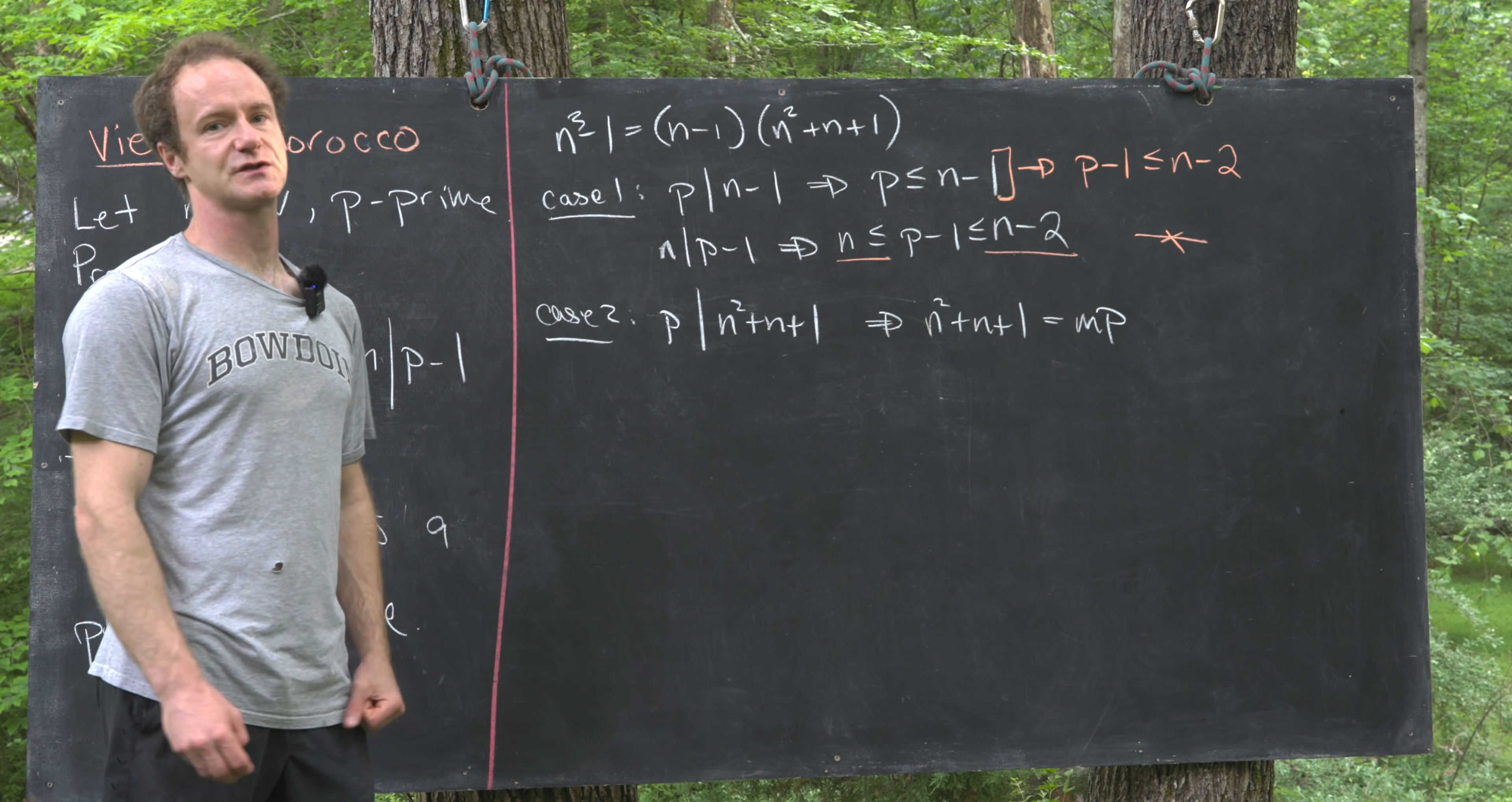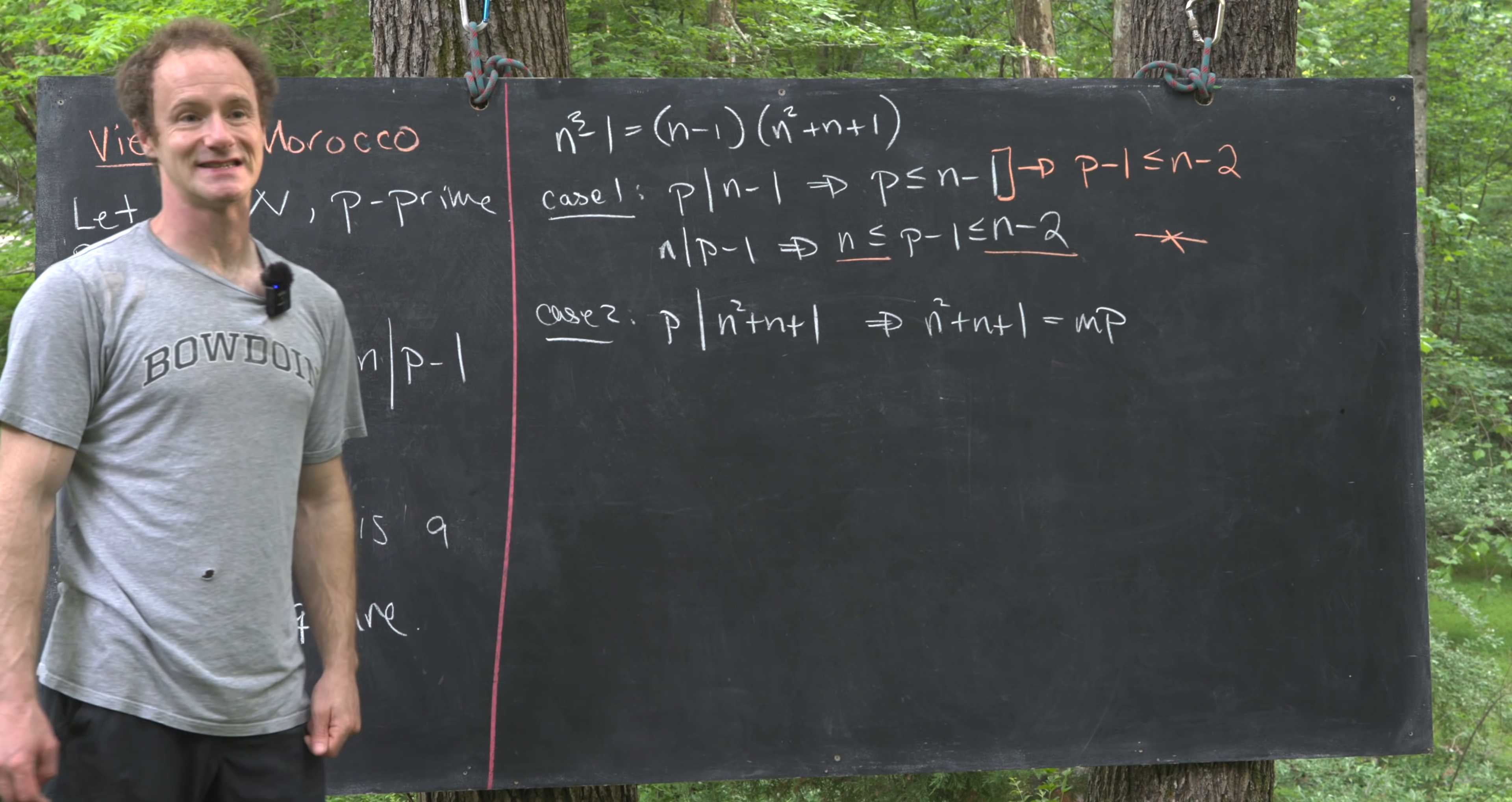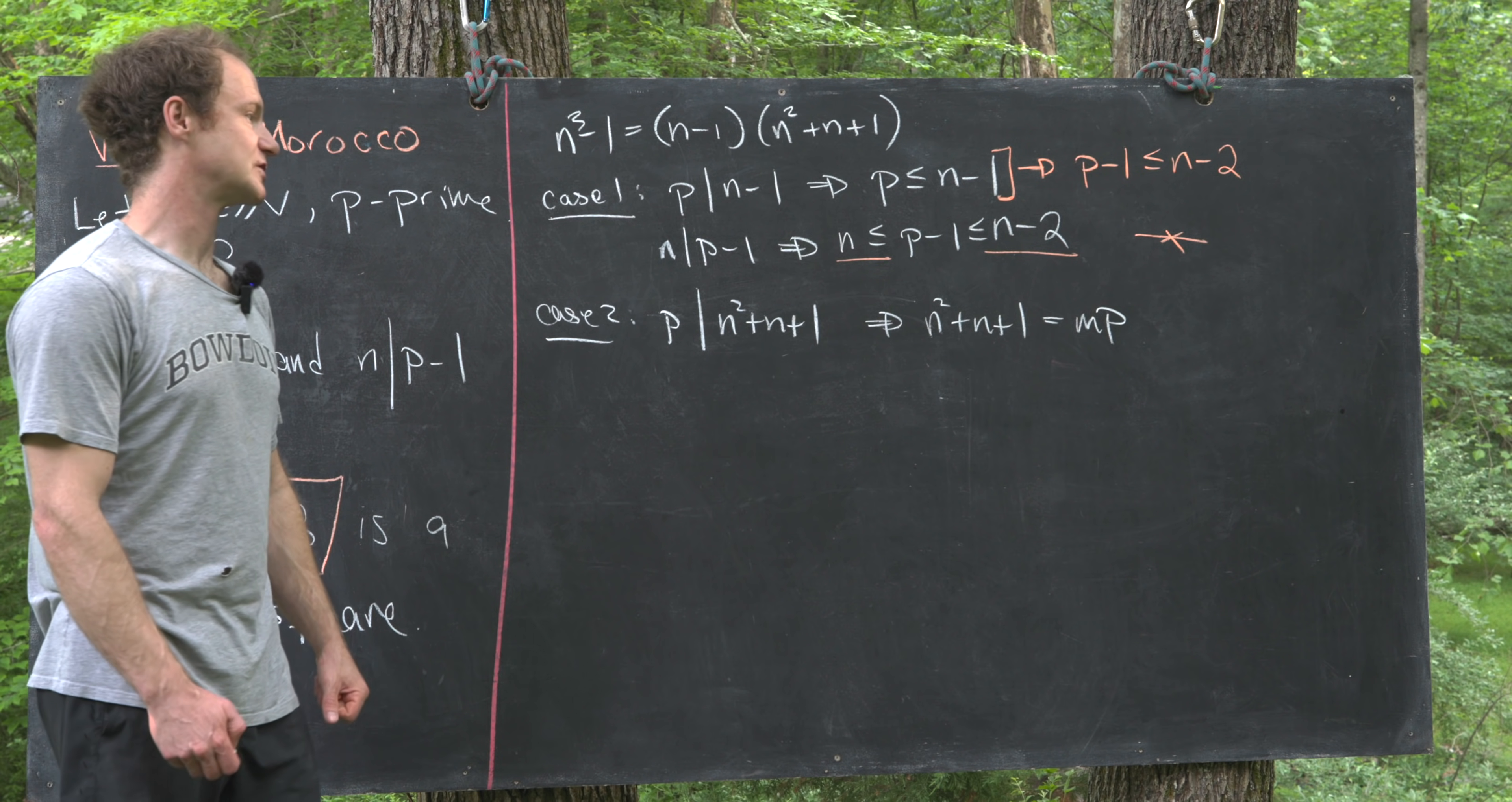Well, the only perfect square binomial where the coefficient of n² and n is the same occurs when you have that coefficient being equal to 4.